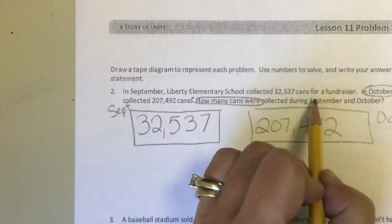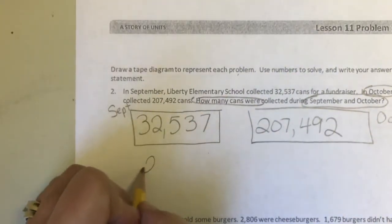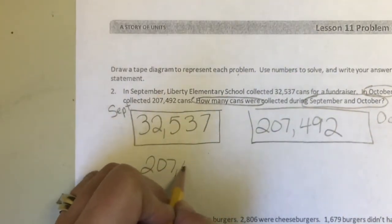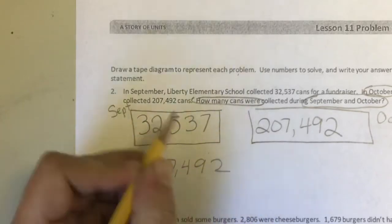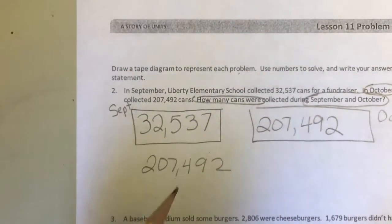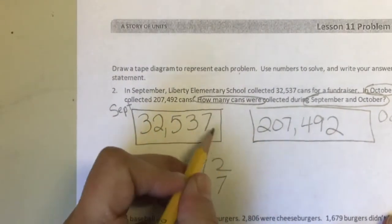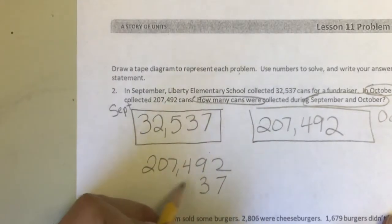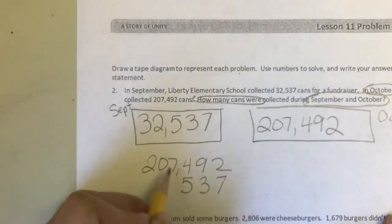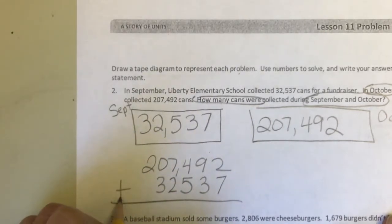So I'm going to start by stacking these two numbers. I'm actually going to put my larger number on top, and then I'm going to make sure that I have my ones place, my tens place, hundreds place, thousands place, ten thousands place, and then I'm going to add.